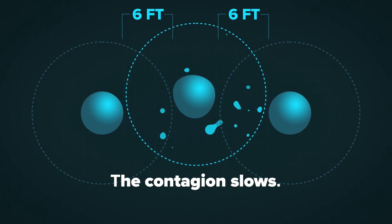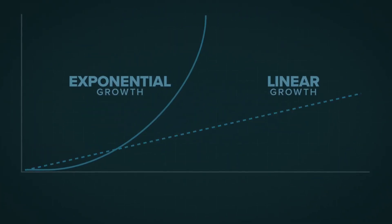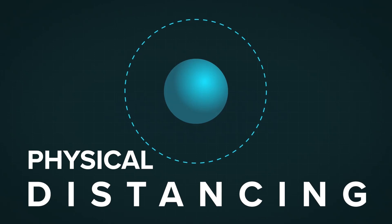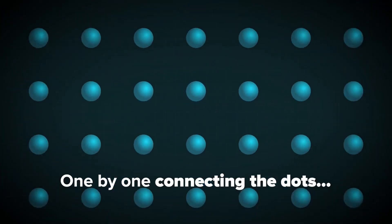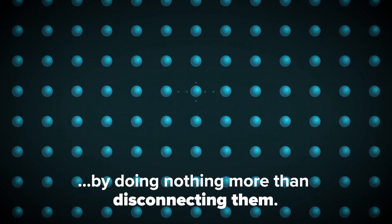The contagion slows. Exponential growth turns into linear growth. If not this. Until there is an effective treatment or a vaccine, physical distancing represents the best odds, say infectious disease experts, one by one connecting the dots by doing nothing more than disconnecting them.